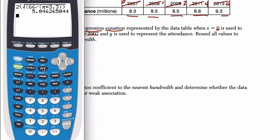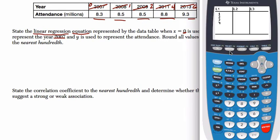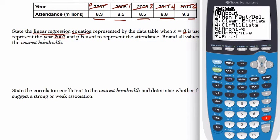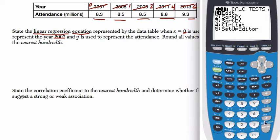Now in the calculator, we can analyze this quickly by pressing STAT, and we want to edit our list. You might have old data in your list. A quick way to clear it is go to 2nd plus choice 4. That clears all the lists. So I go back to STAT, and here under edit, I'm going to enter my data.